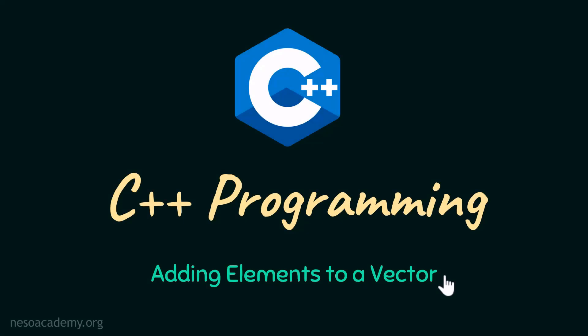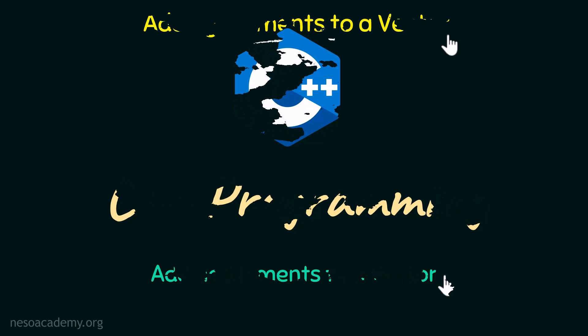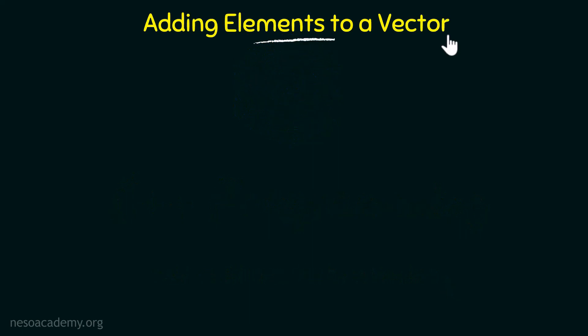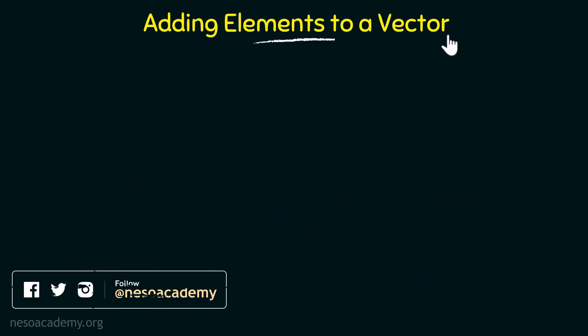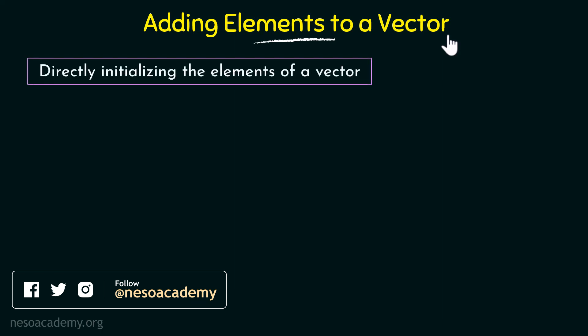In this lecture we will discuss one of the most important vector operations: adding elements to a vector. In the previous lecture we saw how to initialize and define vectors, and we also saw the ways in which vectors function. Now we will see how we can add elements to a vector and how adding elements impacts it. We have already seen some ways of doing this, like directly initializing the elements of a vector.